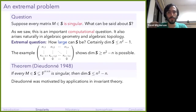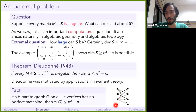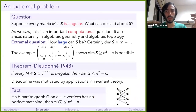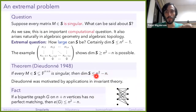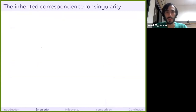Now consider a simple graph theory fact: if I have a bipartite graph with n vertices on each side and no perfect matching, then it has at most n²-n edges. Both extremal problems — the matrix space one and the graph one — give the same answer of n²-n. The extremal constructions also look similar: the matrix with a row of zeros corresponds to the bipartite graph with an isolated vertex. We're getting the same answer to two different extremal problems, and that's suggestive of a deeper connection.